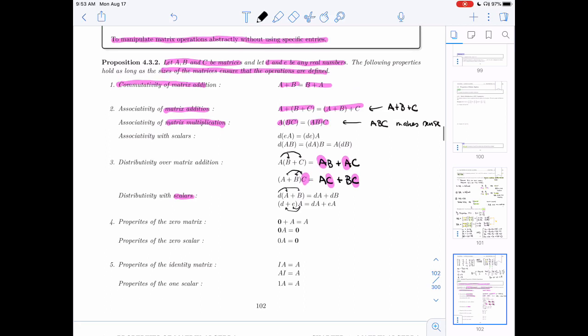Then the zero matrix has tons of nice properties. If I add it to any matrix, I get that matrix back. If I multiply it by a matrix, I get a zero matrix out of it. It might be a different size zero matrix, it depends on the size of A. If I multiply any matrix by zero, I get the zero matrix. And then we have properties for the identity matrix. Whether I multiply I by A on the left or on the right, I get A back. And if I multiply a matrix by one, I get that matrix back.